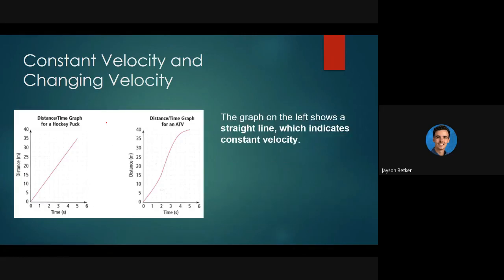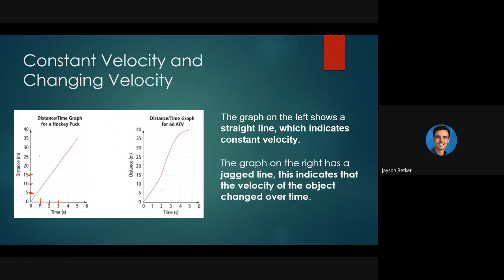The graph on the left shows a straight line, which again means constant velocity. What we notice here is that every second the hockey puck is traveling five meters — so it's going five meters per second. Another second passes, another five meters, another second, another five meters. So it's going five meters per second, whereas the lawnmower was only going one meter per second. The hockey puck is traveling faster.